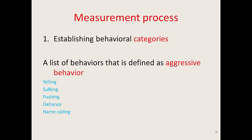No matter which sampling method you use, you have to go through a process of measurement. First, you establish a behavioral category — what kind of behaviors you want to observe and measure. For example, instead of just saying you want to observe students' aggressive behavior, you have to define what aggressive behavior is and what it includes, such as measuring the number of yelling incidents, sulkings, or pushing. These are more concrete and observable than something like aggressive behavior, which is a construct that is hard to measure.